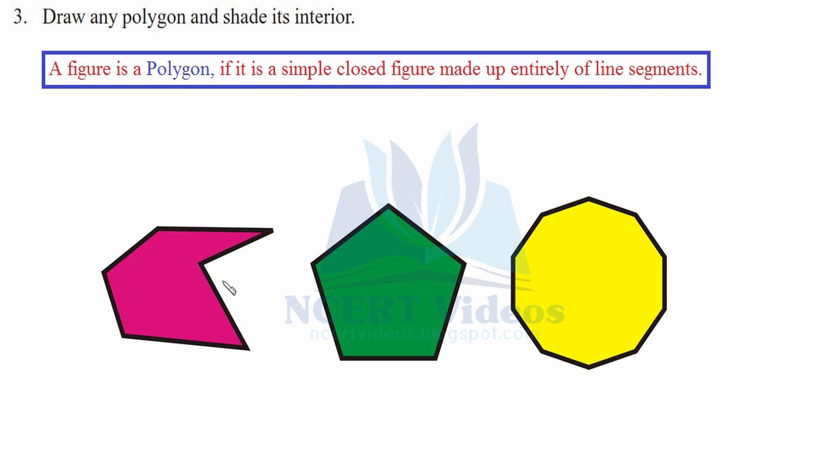It should be made with the help of line segments. There are two conditions: it must be closed and it must be line segments. All these three are closed figures and they are polygons. We have shaded its interior. This is interior, this is boundary.